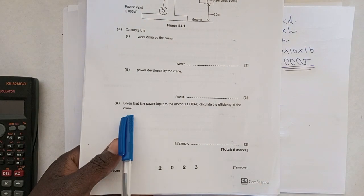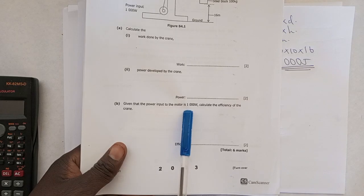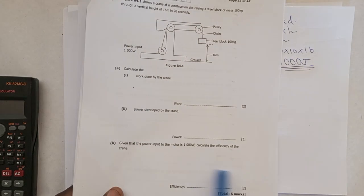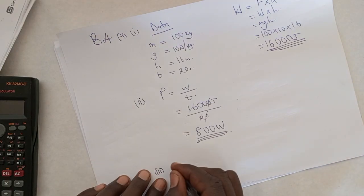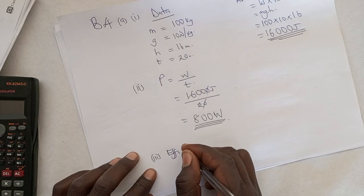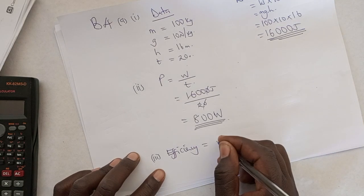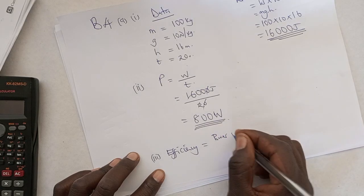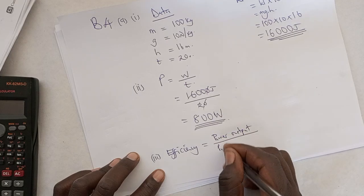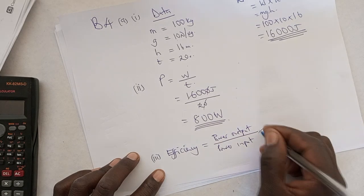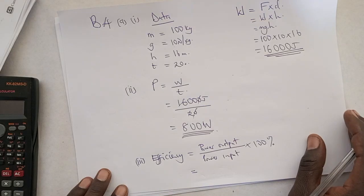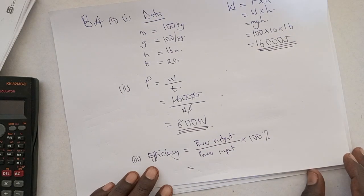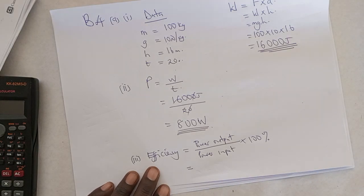We move forward. Given that the power input to the motor is 1,000 watts, which is this one here in the question, calculate the efficiency of the crane. The efficiency of the machine is calculated by this formula. We say efficiency is equal to power output over power input, multiply this by 100%. There is no machine that is 100% efficient, but some questions come with that condition.